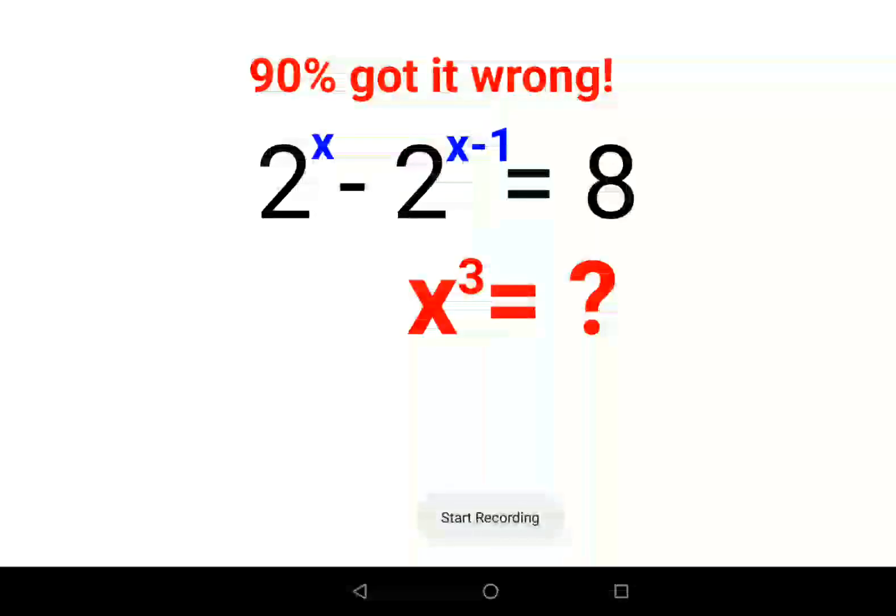Welcome everyone. Today we're going to solve a nice indices problem where the given equation is 2 raised to x minus 2 raised to x minus 1 equals 8, and we need to find the value of x cube, not just x.